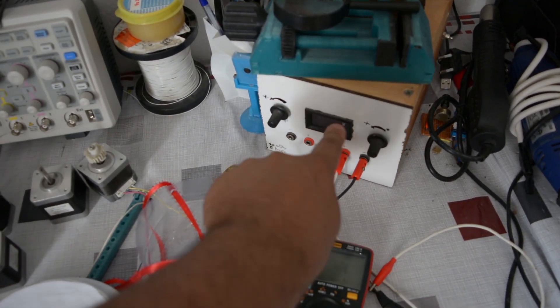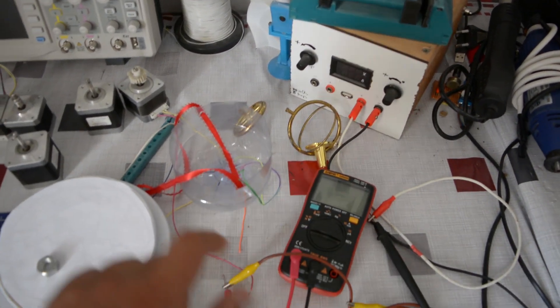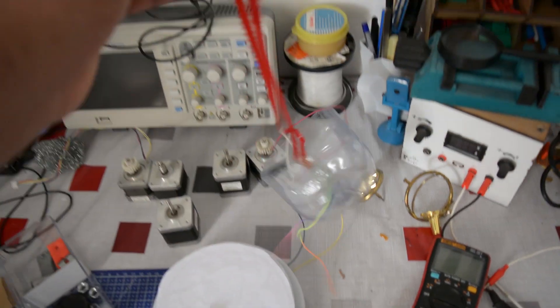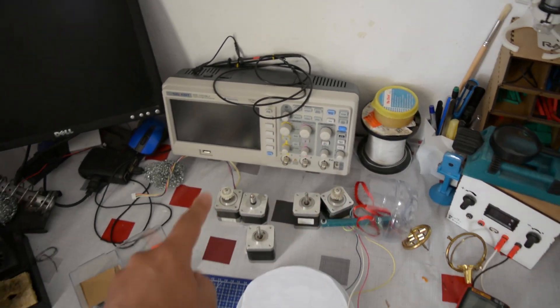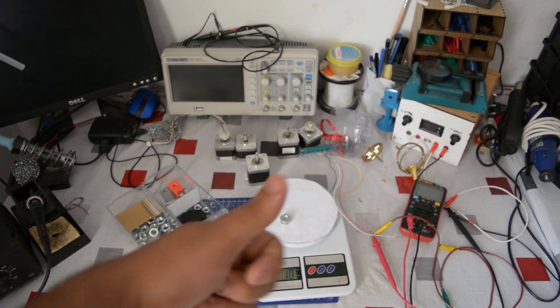We will be measuring the torque using this 3D printed part that I made, so the work principle is simple. The distance between the weight and the motor will be exactly 10 centimeters, and depending how much grams the motor can hold, we will know exactly how much torque each motor has. Now the units will be Newton per millimeter.